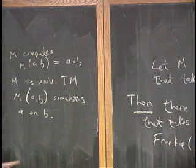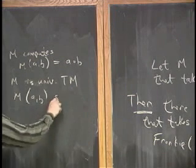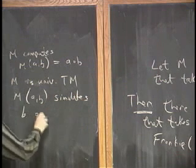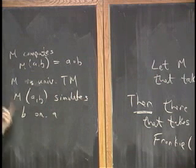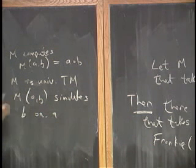Now, as trivial as that is, I'm going to switch this around because this is the coolest thing. M of AB simulates B on A. It's kind of easy just to switch your universal Turing machine around. Now, it simulates the second input on the first input.